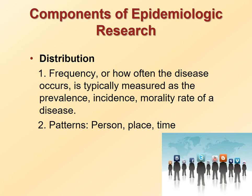Components of epidemiologic research include distribution, determinants, and application. Distribution of disease relates to the frequency and patterns of disease occurrence in a population. Frequency, or how often the disease occurs, is typically measured as the prevalence, incidence, and mortality rate of a disease. Patterns of disease occurrence refer to characteristics related to person, place, time, and socioeconomic status. Characteristics of place include geographic differences, urban-rural variation, and differences in types of occupations. Time of disease occurrence refers to annual, seasonal, or daily patterns of occurrence.